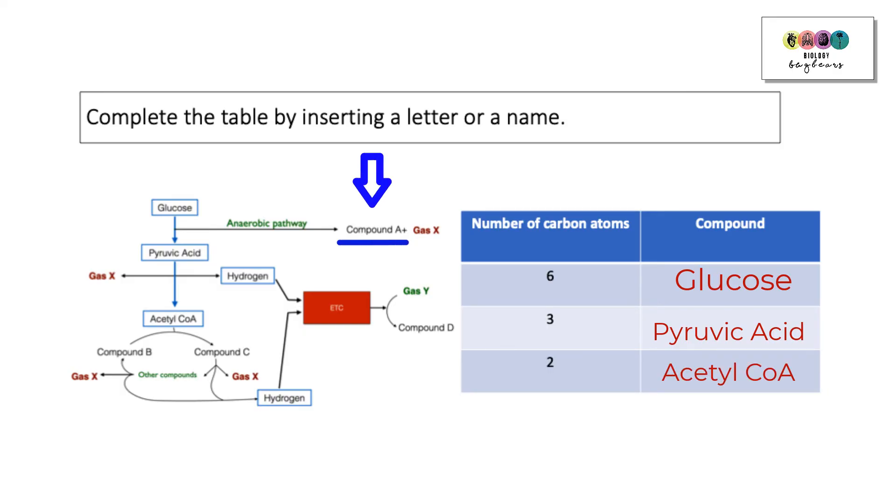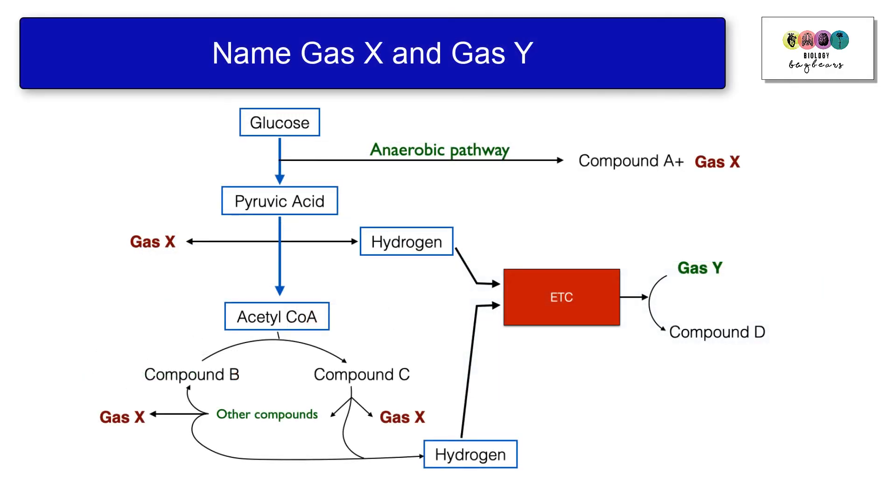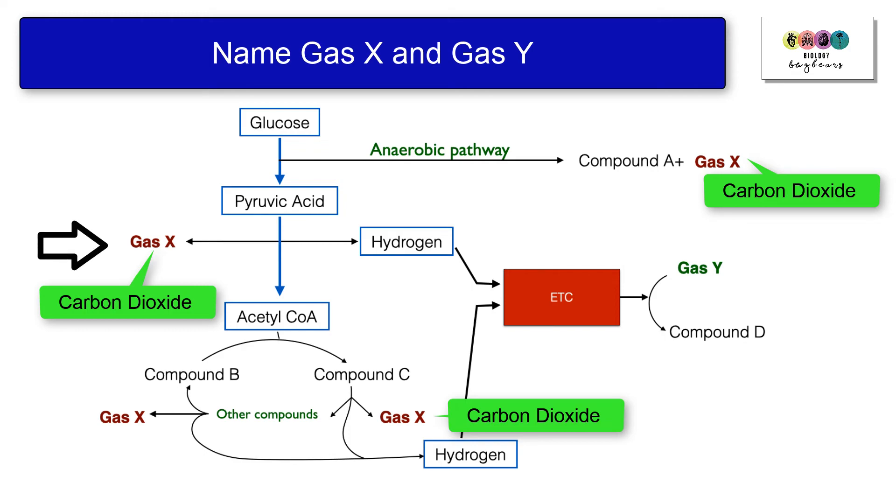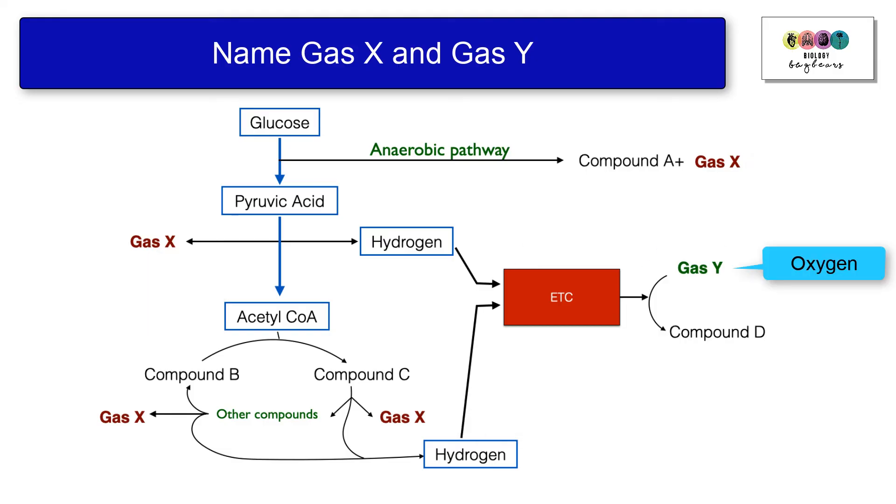Name gas X and gas Y. Well, gas X has to be carbon dioxide, and an easy way of figuring it out is look at pyruvic acid and look at the gas that's coming off, so we know that it loses a carbon as carbon dioxide. And again, down at the bottom in Krebs cycle, if we look at the electron transport chain, we can see that those electrons are going to combine with gas Y, which is oxygen. So we know that gas X is carbon dioxide and gas Y is oxygen.